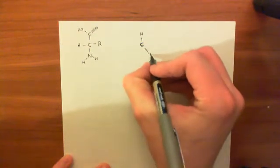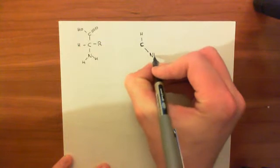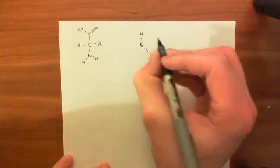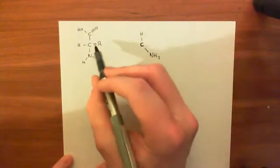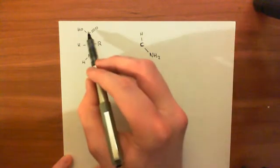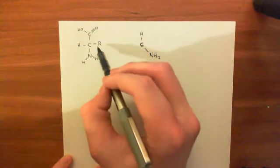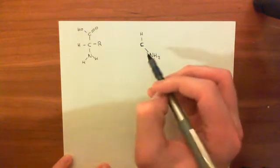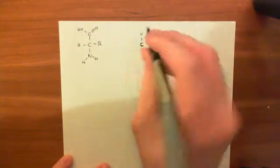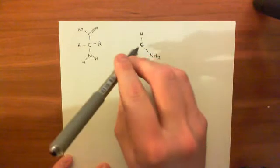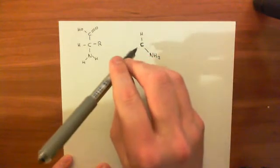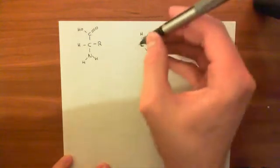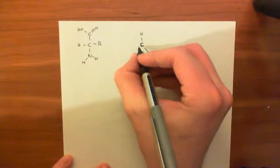We'll have the amino group also in the same plane as the piece of paper. Then we'll have to put the other two groups — the carboxyl group and the R group — which won't be in the same plane as the piece of paper. One of them will be pointing outwards of the page, and one of them will be going into the page.